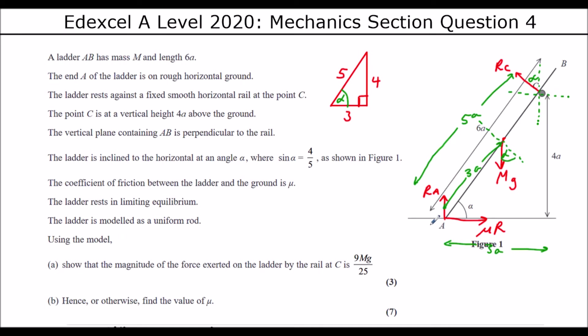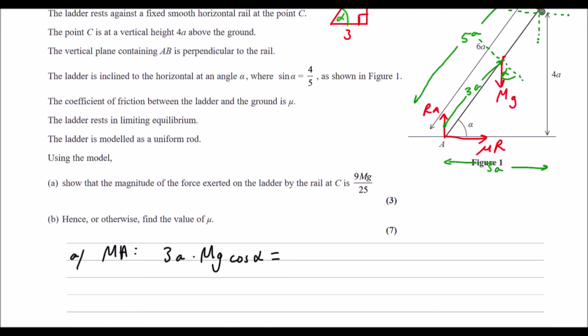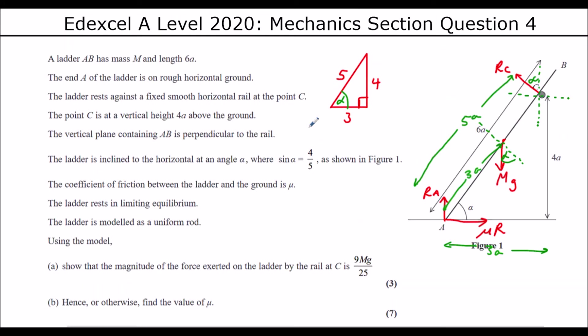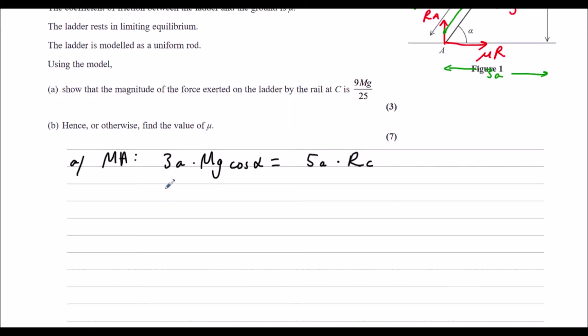And perpendicular is mg cos alpha. Anti-clockwise, we have five A times the reaction at C. Cos alpha, so cos alpha, that's the adjacent over the hypotenuse. That is three fifths.